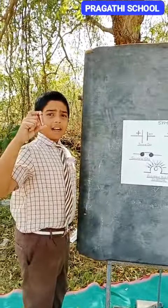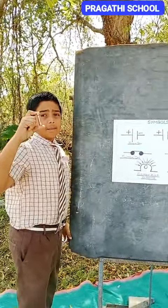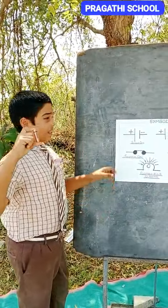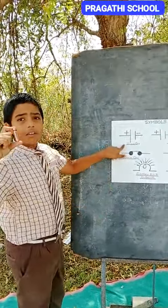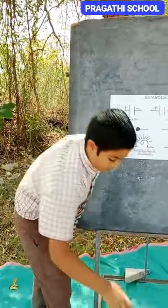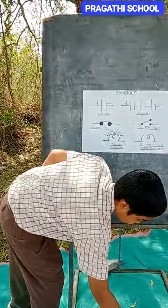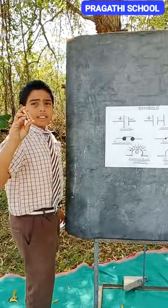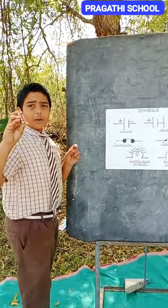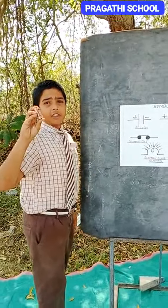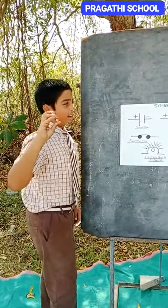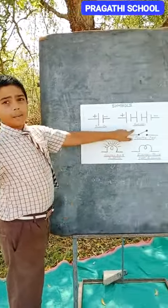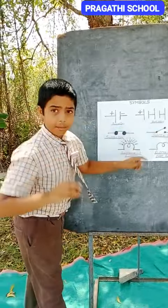Do you know what is meant by the symbol of cell? This is the symbol of cell. When two cells are joined together, it is called a battery. This is the symbol of battery.